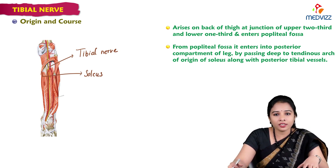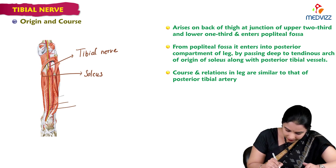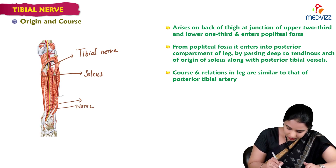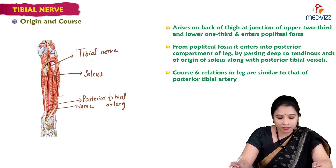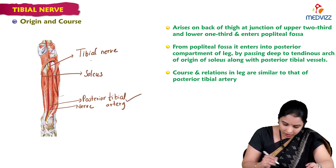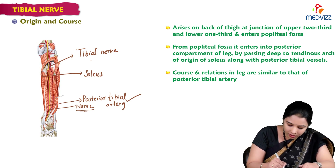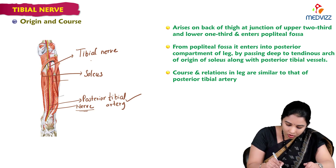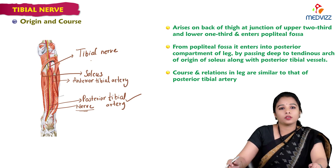If we see its course and relations in the leg, it is almost similar to the posterior tibial artery. We can see the tibial nerve is along with this artery — the posterior tibial artery — which accompanies the tibial nerve. The tibial artery divides into anterior and posterior tibial branches. The posterior tibial artery runs along with the tibial nerve, while the anterior tibial artery pierces the intermuscular septum and muscles to enter the anterior region.